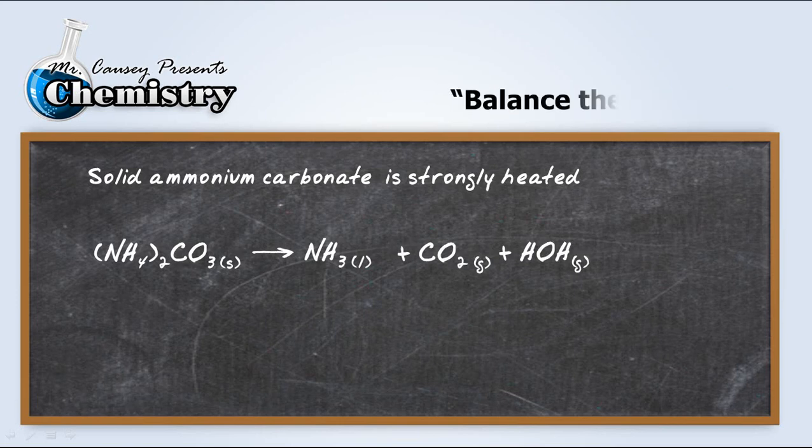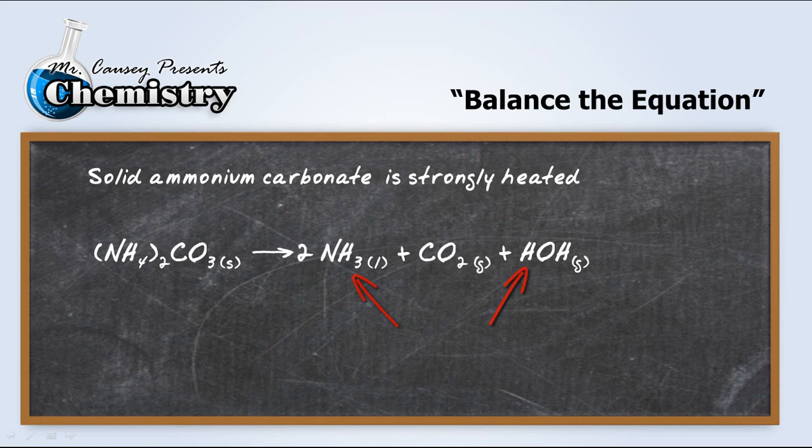Now let's balance the equation. We have two ammonium ions, which gives us two nitrogens and eight hydrogens. Well, I look over on the other side, and I have only one nitrogen and I only have five hydrogens. So let's make that a two there, and that balances everything. It's balanced.